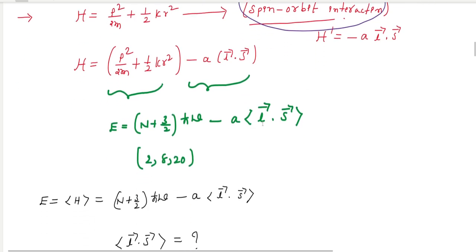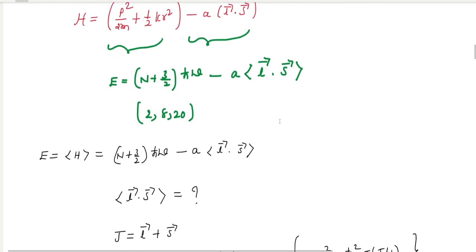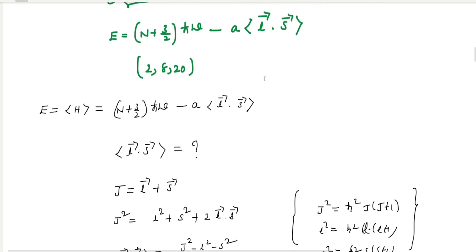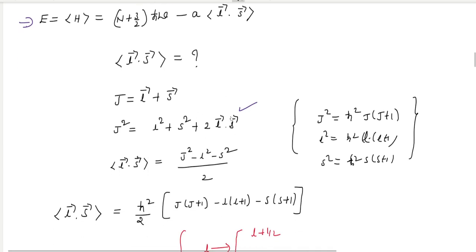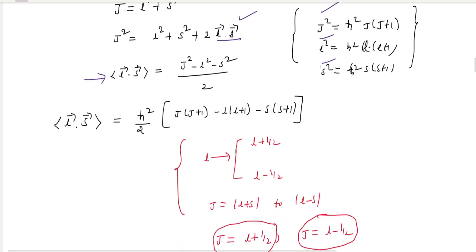Now we need to find the value of l·s. We know that j = l + s. Squaring both sides gives j² = l² + s² + 2(l·s). Rearranging, we can get the l·s value. Using the eigenvalues of j², l², and s², we can substitute and find the expression for l·s.